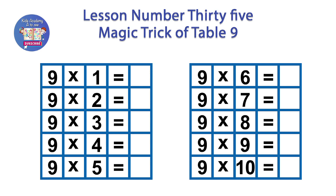Now just write 0, 1, 2, 3, 4, 5, 6, 7, 8, 9 from top to bottom. And finally, just write 0, 1, 2, 3, 4, 5, 6, 7, 8, 9 from bottom to top.